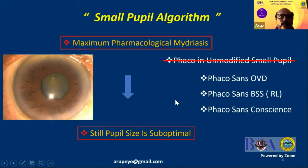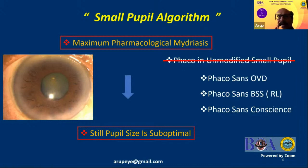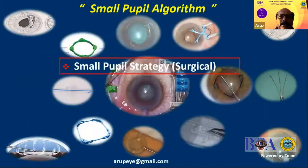Whenever you have a pupil which is less than three to four millimeters, or in certain situations when it is a little larger but has associated comorbidities — for example a shallow anterior chamber, an unhealthy cornea, a very hard cataract — we must resort to a small pupil strategy, and there are a plethora of possibilities and devices available for us.